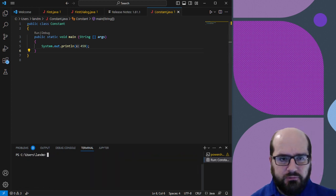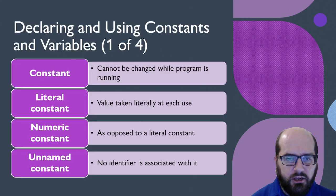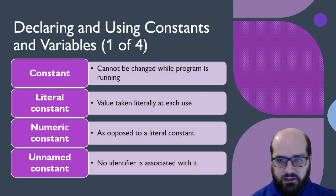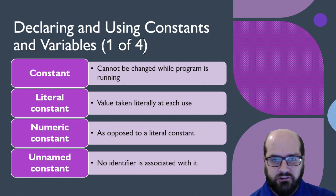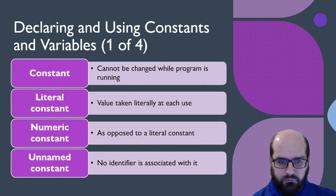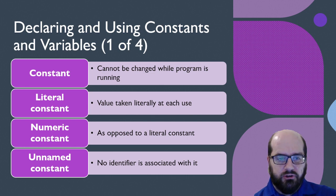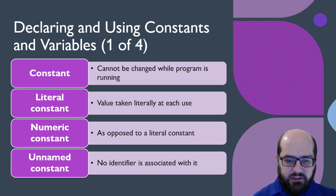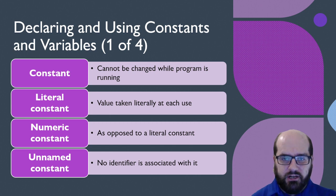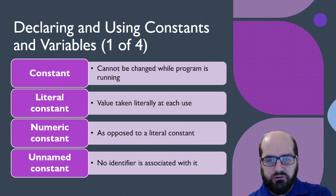If we look at this particular statement and the value 459, we know that this is a constant. We can't go back and change this while the program is running. When print line runs, or print runs, the value is taken at each use. So it is a literal constant, and in the case of this program, it's a numeric constant because it is numeric versus like a string where it has quotes around it.